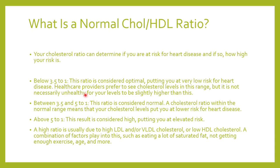The normal cholesterol to HDL ratio should be below 3.5 to 1 — this is optimal and puts you at a lower risk of heart disease. Doctors prefer cholesterol levels in this range. If your ratio is above 5 or 6, your risk of developing heart disease is higher. A high ratio indicates your good cholesterol (HDL) is low while total cholesterol is high, which could be due to elevated LDL, triglycerides, or VLDL.